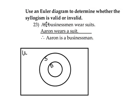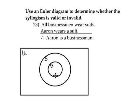The first premise says all businessmen wear suits. So that dictates that I must have a circle of businessmen enclosed inside a circle of people who wear suits.